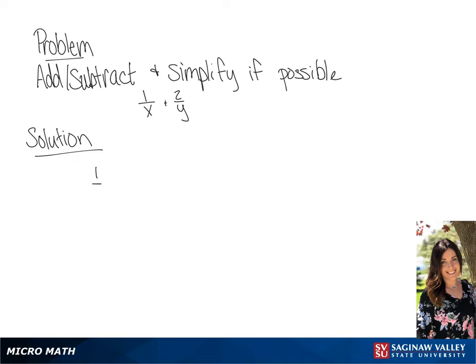Our problem is 1 over x plus 2 over y. We need to get a common denominator, which is going to be xy. So we're going to multiply the first fraction by y over y, and the second fraction by x over x.